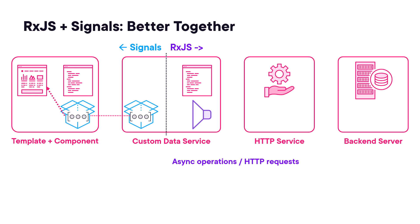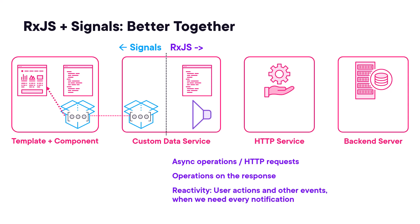RxJS and observables are our go-to for asynchronous operations, such as HTTP requests, so our data service uses observables to issue HTTP requests and return the responses. We leverage the large set of observable operators. We modify, filter, merge, and process data as needed for our application. And we use a subject for reacting to user actions, especially when we need every notification. We then create a signal from that observable.